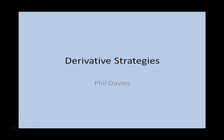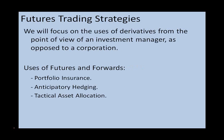In this video, we're going to look at some basic trading strategies that involve the use of derivative securities. We're going to look at strategies that involve both forwards and futures, and options. We're going to start by looking at futures trading strategies, and we're looking at them from the point of view of an investment manager, as opposed to a corporation using these products purely for risk management. There are three common ways futures and forwards are used: portfolio insurance, anticipatory hedging, and tactical asset allocation.